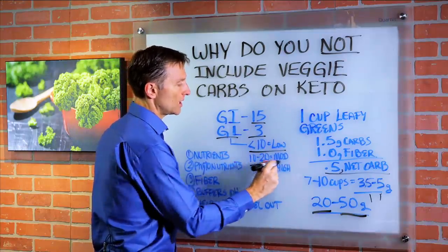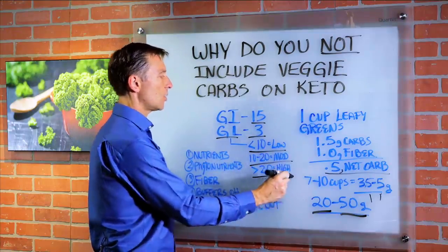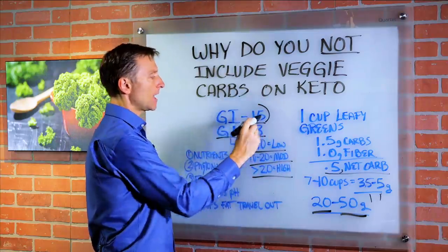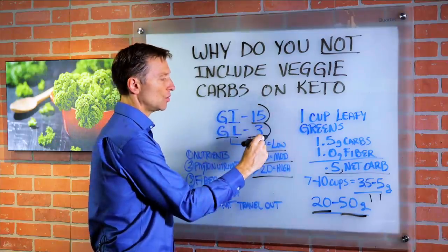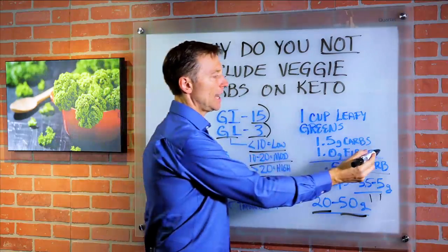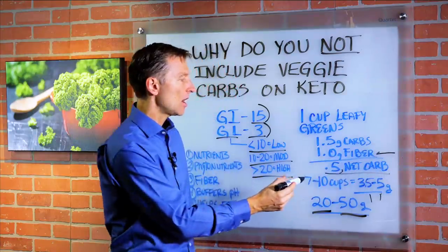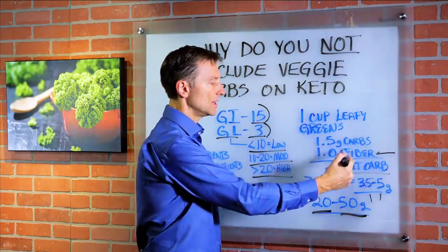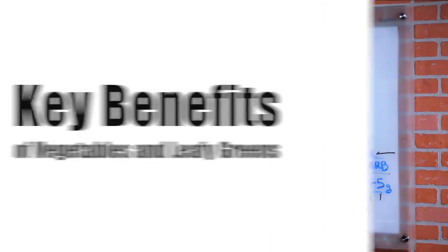A glycemic load of 3 is extremely low — less than 10 is low, 10 to 20 is moderate, and greater than 20 is high. So salad is low on the glycemic index and low on the glycemic load. It has a significant amount of fiber, which actually causes the overall carbs to be less, leaving us with just 0.5 grams of net carbs.